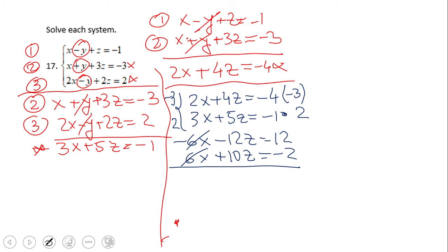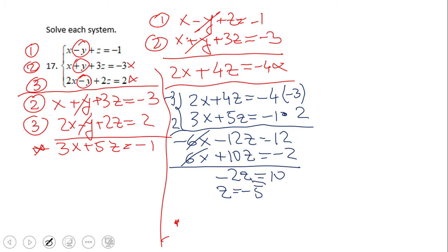The x cancels out and we have negative 2z equals 10, which gives us z equals negative five.